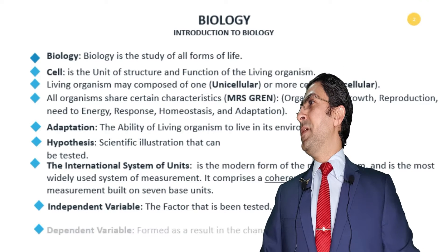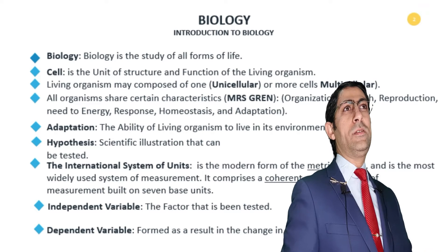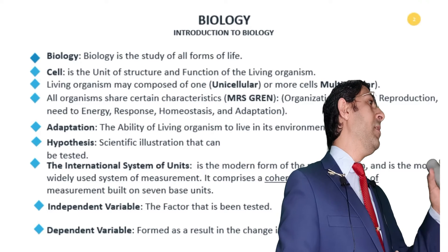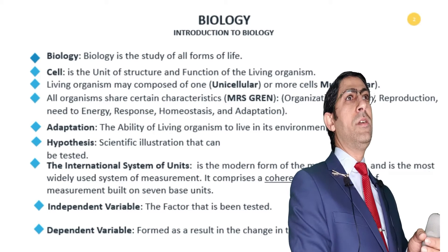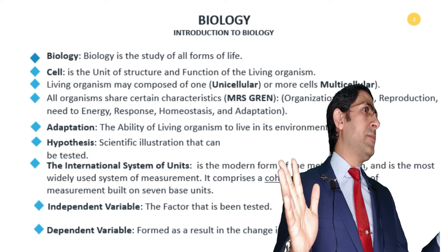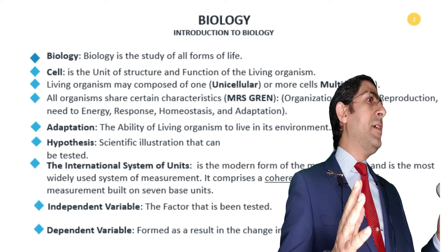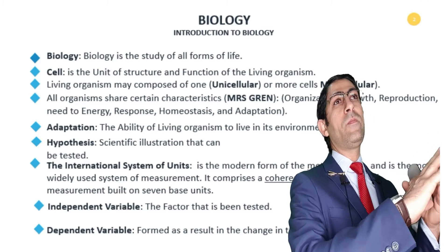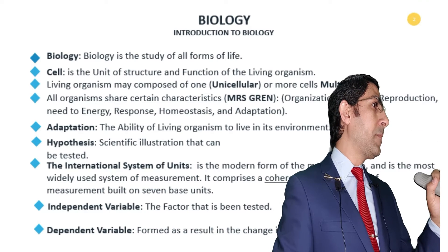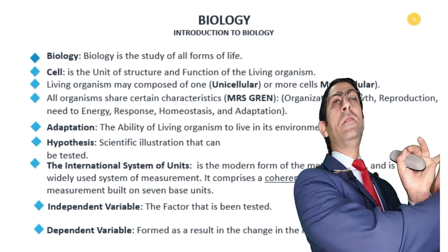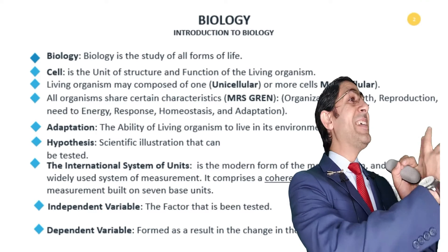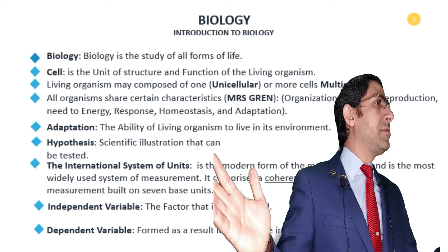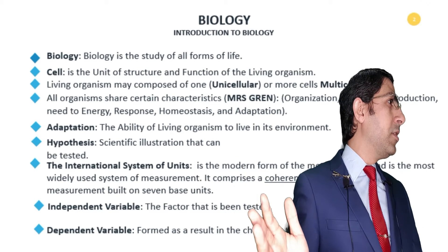Independent and dependent variables — this is very tricky since grade 7. Keep these very important words in mind; they're going to help you in physics and chemistry as well. In any experiment in the world, there are three variables: the independent variable, the dependent variable, and other variables that should be maintained constant.